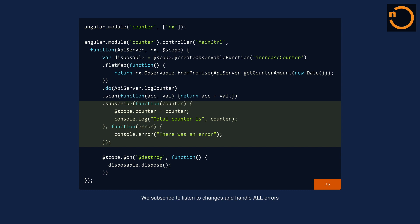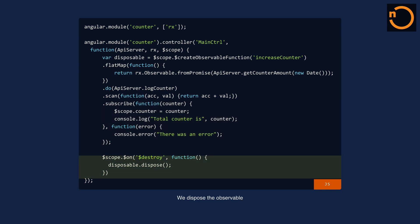The second parameter in subscribe is a function that handles errors. The nice thing is that this error function handles errors that can happen anywhere in the transformation chain — in the flatMap, the do, the scan. Whatever error is there, I can handle it in subscribe. And that's it — that's all I need. I'm showing everything: I converted click, click, click to 3, 4, 5, and then to 3, 7, 12. Also, an observable will always keep running and occupy memory, so when somebody leaves this page, I need to dispose it so the memory is freed — because this infinite list is always waiting for new values.